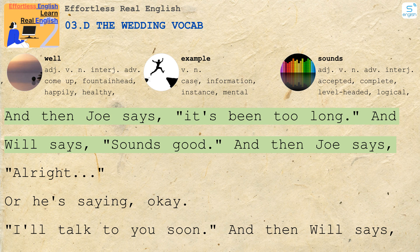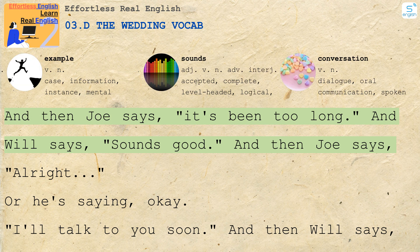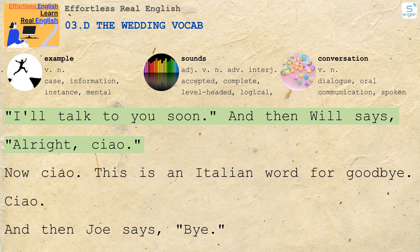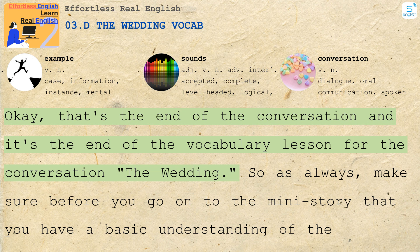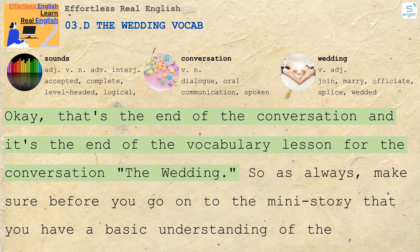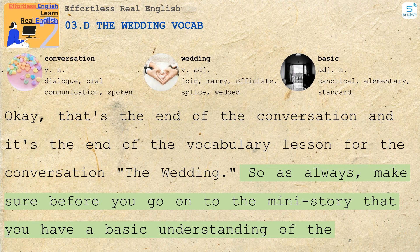Joe says, 'All right, I'll talk to you soon.' Will says, 'All right. Ciao.' Ciao is an Italian word for goodbye. Joe says, 'Bye.' That's the end of the conversation and the end of the vocabulary lesson for The Wedding. As always, make sure you have a basic understanding of the vocabulary before going on to the mini story. When you feel ready, listen to the mini story next. Take care, see you next time. Goodbye.